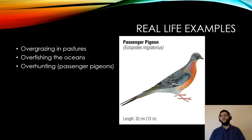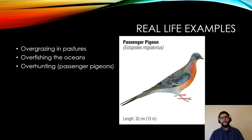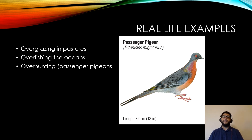Some real-life examples of this would be overgrazing in pastures, overfishing in the oceans, and over hunting. Here's an example: the passenger pigeon. The passenger pigeon went extinct because it was a common bird that would fly over and people could just go outside and shoot into the skies. They would literally sell passenger pigeon meat by the ton.